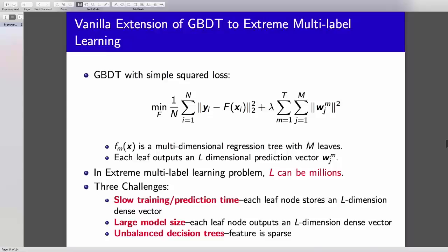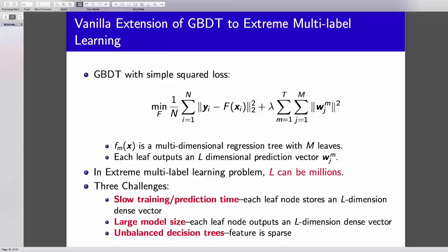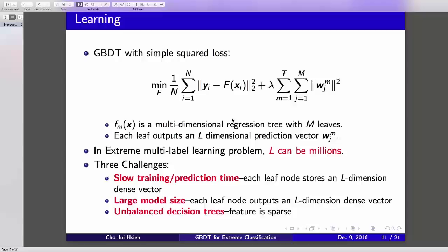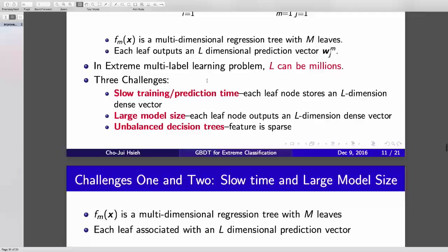We try to apply this GBDT algorithm to extreme classification. And what's the difficulty? In this work, we just use a simple square loss. We try to minimize the square loss of Yi, which is the observed label, minus your prediction of the tree. The problem is L is very large. Number of labels is very large. So Y is a very large 1 million dimensional vector. In this case, you have slow training prediction time and huge model size and unbalanced decision tree.